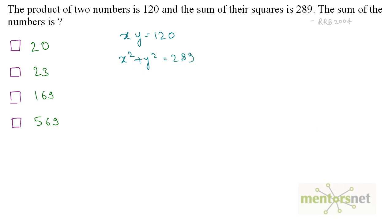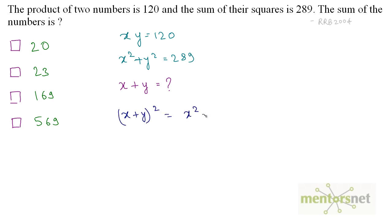What has been asked is the sum of the numbers, so x plus y equals question mark. What can we do to find x plus y? We know the formula: x plus y whole squared equals x squared plus 2xy plus y squared.